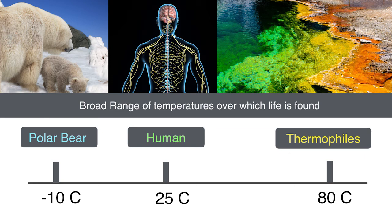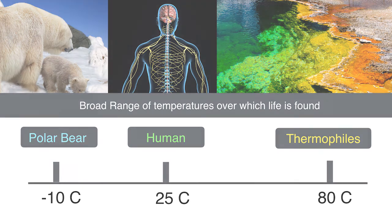Now that we've covered narrow limits for life using polar bears, humans, and thermophilic bacteria, it's time to look at the very first concept: there is a broad range of temperatures over which life is found. Although humans, polar bears, and thermophiles have narrow limits, if we put them together on a chart we can see that life on earth can be found from one extremity to the other. This is why regardless of it being freezing cold or boiling hot, life can be found over a large broad range of temperatures.